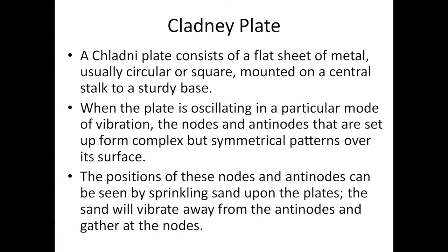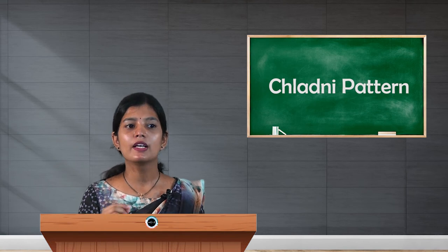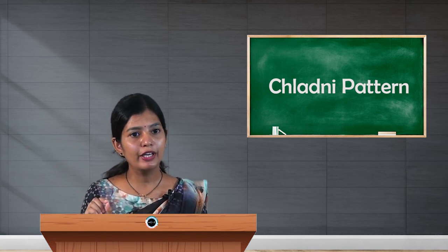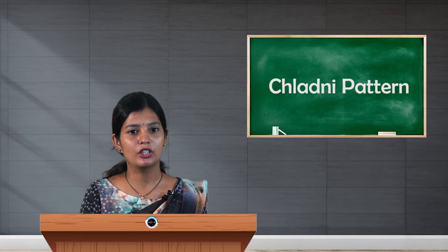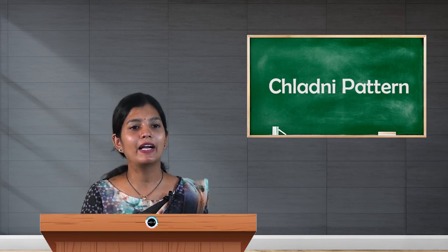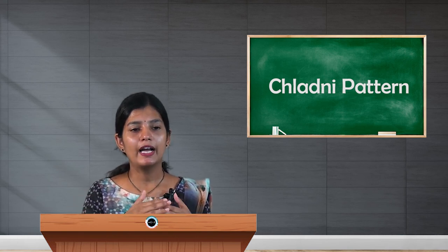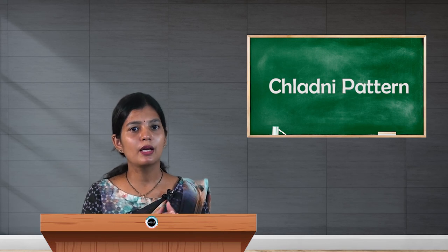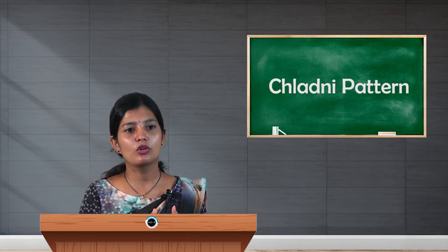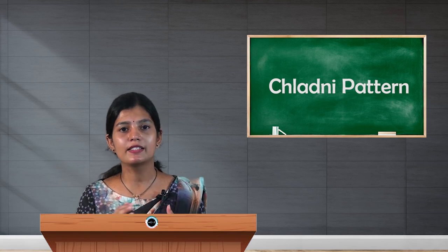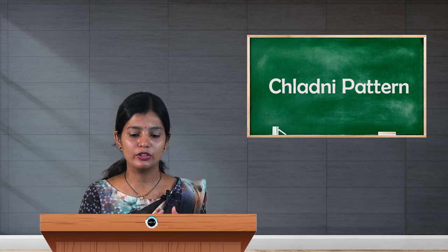The positions of the nodes and antinodes can be seen by sprinkling sand or salt on the plate. The sand vibrates away from the antinodes and gathers at the nodes, forming certain geometrical patterns. The nodes and antinodes differ based on the frequency given to the plate, so different geometrical patterns can be formed.